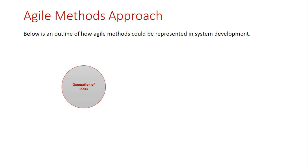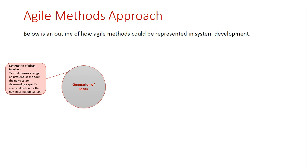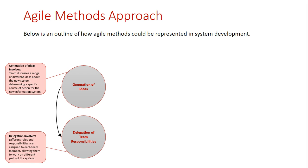First, we need to be generating ideas. The team would get together, discuss different ideas about what the new system could be, and determine a specific course of action. From here, they need to delegate certain responsibilities — the team needs to be divided up, and we need to know who has what role and what parts of the project they are all working on.